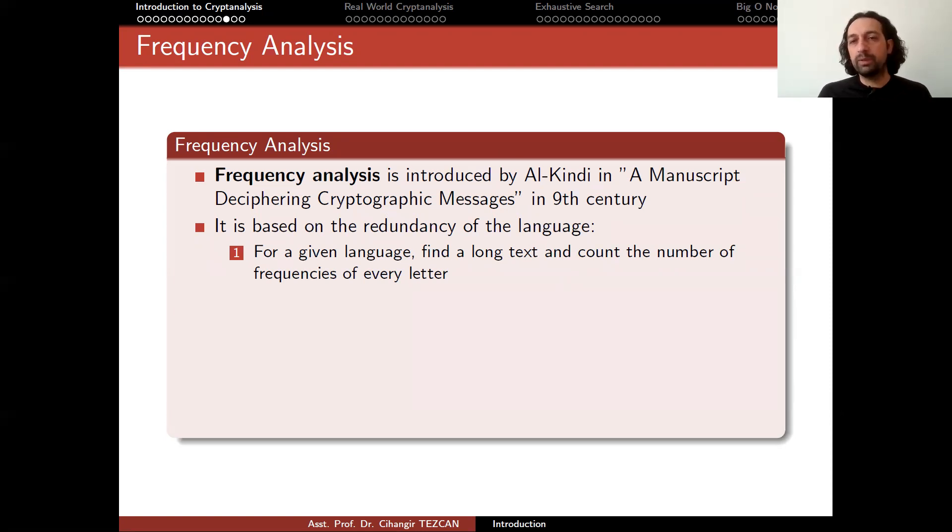And count the number of frequencies of every letter. So just get a novel written in that language and just count how many times a letter appears. So by using a computer, this is today very easy. You can just write a simple code to count how many times A appears and B appears. And if you divide it by the number of every letter in the text, you will get the percentages of the letters that they appear. So this is what we call the frequency.